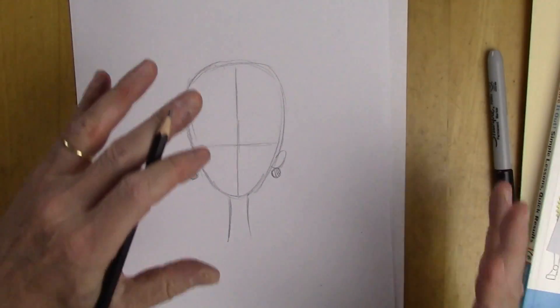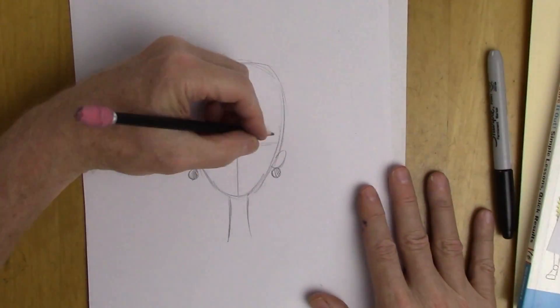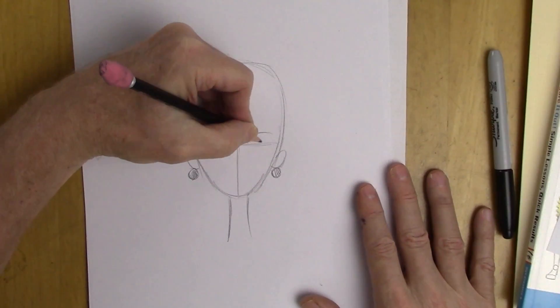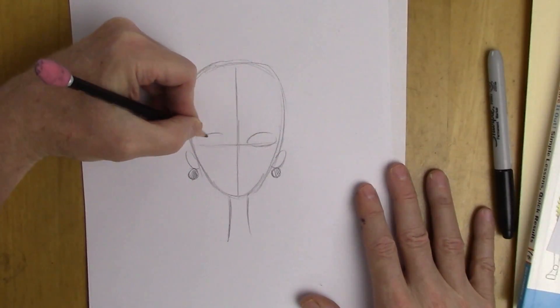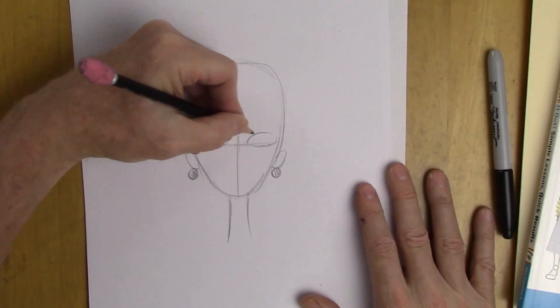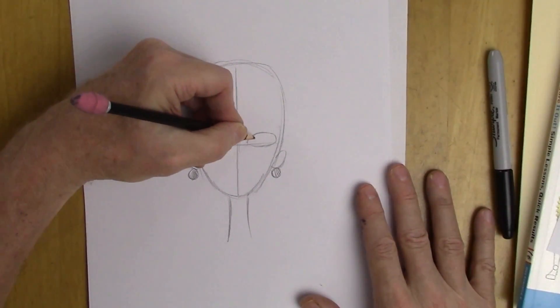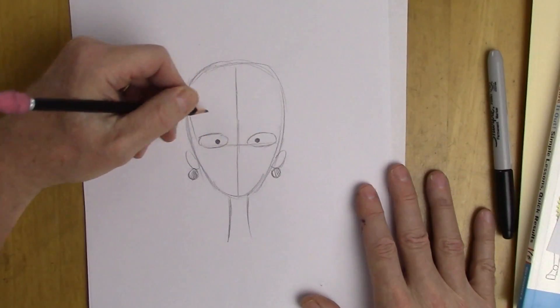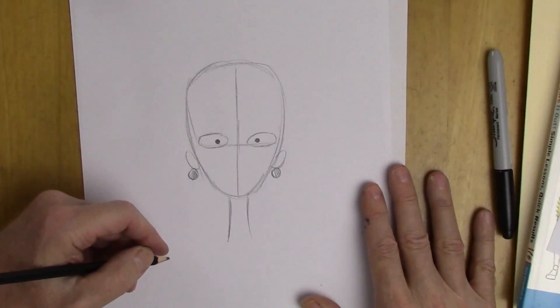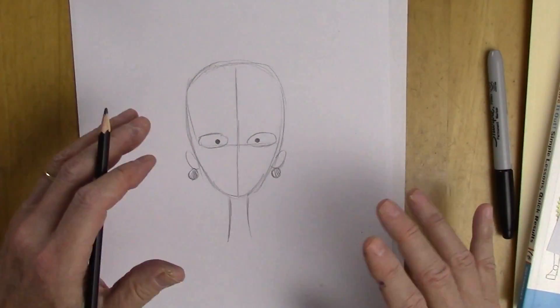And now we'll put the element in that is particularly exaggerated, which are these wide, wide eyes. And little dots for the eyes, like that. You can start seeing it's fun right away.